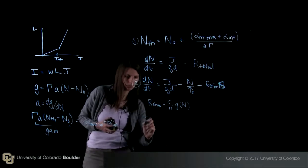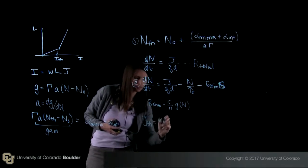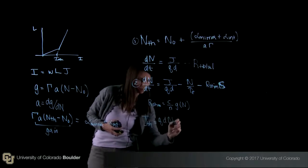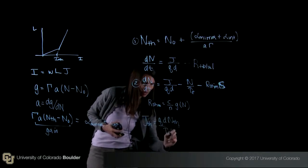What I find is that j threshold equals qd n threshold over tau e at n threshold.